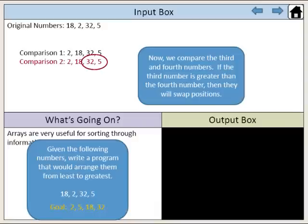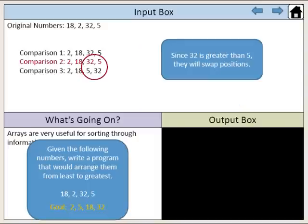Now we compare the third and fourth numbers. If the third number is greater than the fourth number, then they would swap positions. Since 32 is greater than 5, they will swap positions.